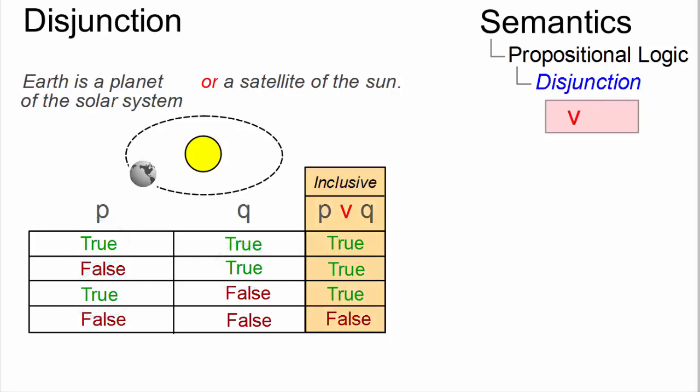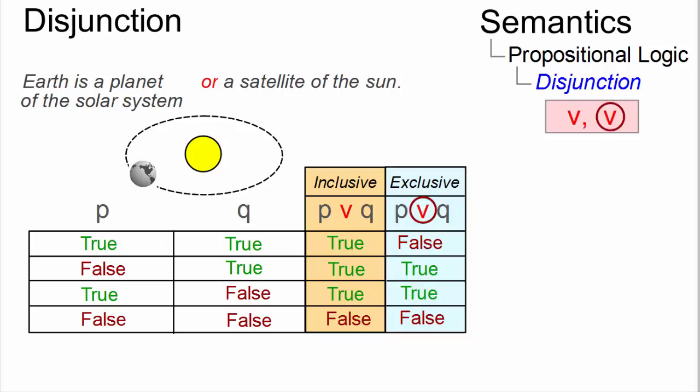This type of disjunction is referred to as inclusive disjunction. A stricter type of disjunction, often referred to as exclusive disjunction or short XOR, is true only if one of the disjuncts is true.